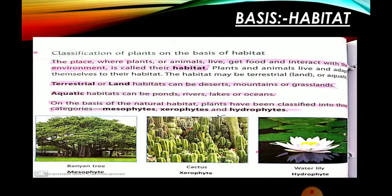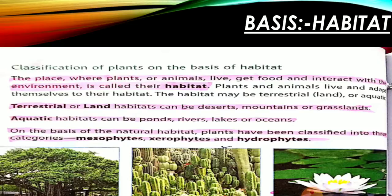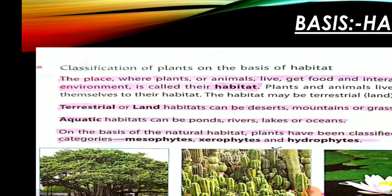Then we are coming on the basis of habitat. Habitat मतलब कहाँ वो रहते हैं, कहाँ वो उगते हैं। वो place, वो जगह जहाँ पे plants और animals रहते हैं, अपना food लेते हैं, और environment के according interact करते हैं — that place is known as habitat. So plants and animals अपने आपको एक place के according adapt कर लेते हैं। एक habitat हो गया land, और एक habitat हो गया aquatic — जो plants water में उगते हैं.